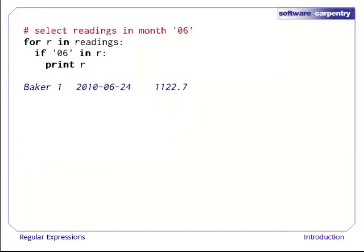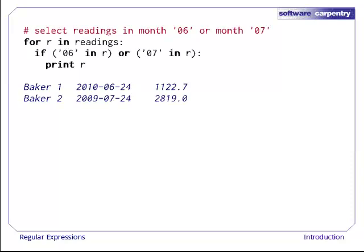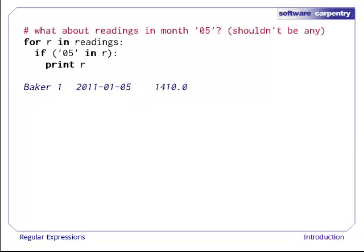Now, without regular expressions, we can select records that have the month 06 just by saying if 06 is in the record. If we want to select data for two months, we have to say if 06 in the record or if 07 in the record. Now, we should realize that there's a problem here. If we say 05 in record, it isn't matching against the month. It's matching against the day. Right now, we have no easy way to distinguish those two cases. This is a problem we'll come back to later.